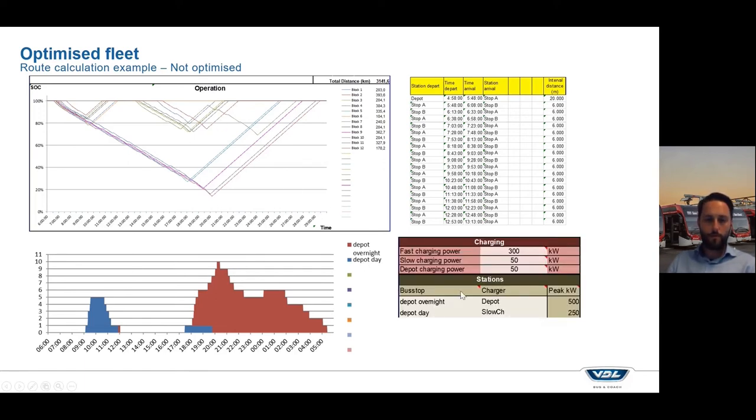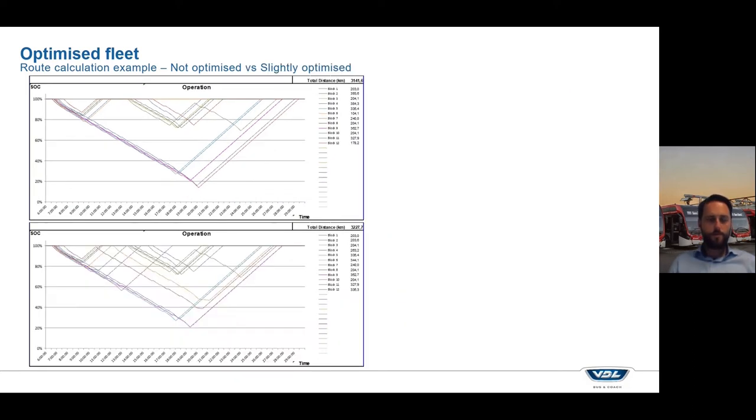In total, you need 500 kilowatt hours as a peak grid connection at one point, which is very simply just the 10 chargers that we have active at the same time times 50 kilowatt hours of depot charging power results in 500.